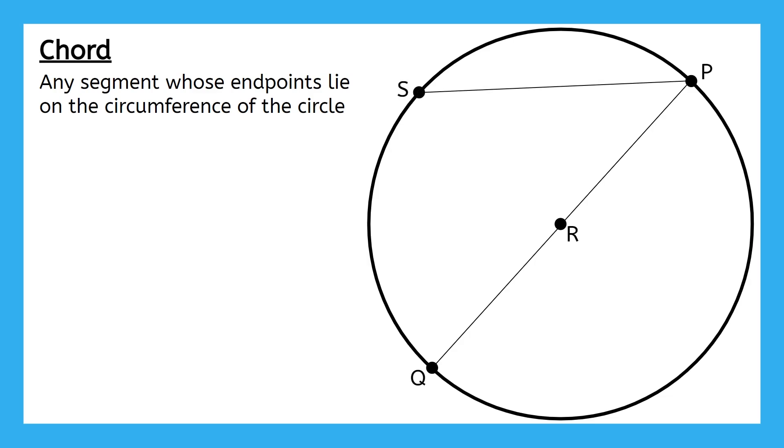Can you think of another chord we could draw that uses two of the points shown? If you said segment SQ would also be a chord, that's right. But if you said SR, this would not be correct, since both endpoints of the segment SR are not on the circumference of the circle.